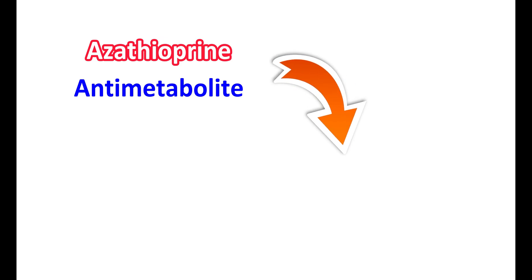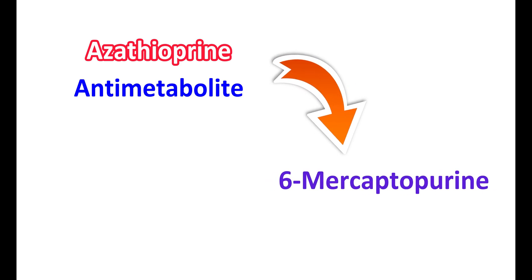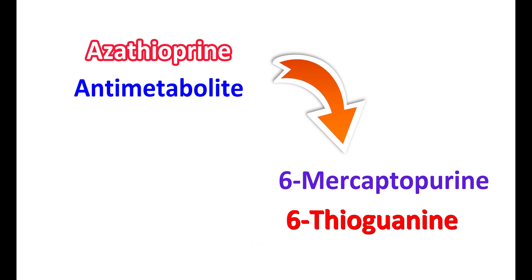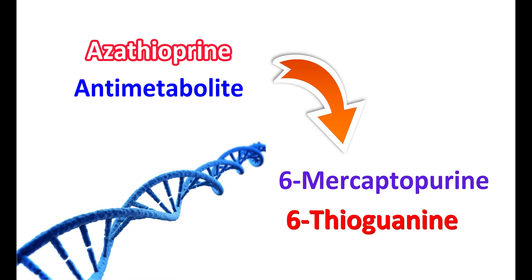Now let us see how this medication works. Azathioprine is a purine anti-metabolite — it acts like a purine but inhibits purine metabolism. Azathioprine is a prodrug that is converted into the active metabolite 6-mercaptopurine, which can inhibit the synthesis of DNA, RNA, and proteins. It is also converted into another metabolite, 6-thioguanine. These metabolites act as false purine metabolites and are incorporated into DNA, but they are non-functional, which prevents cell division.